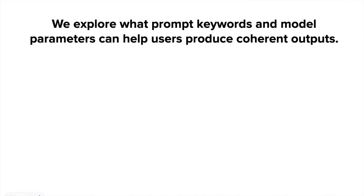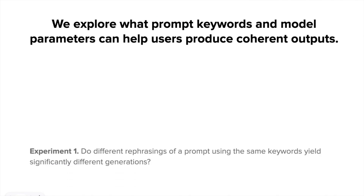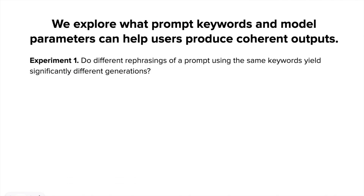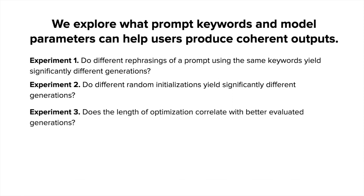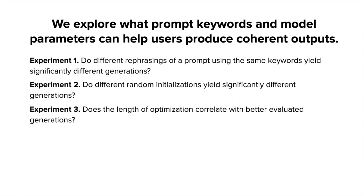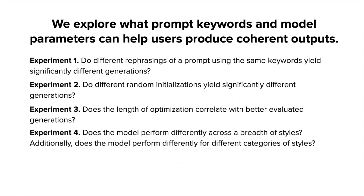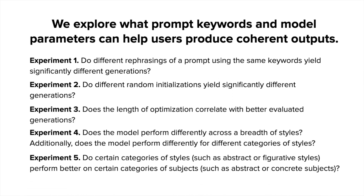In this paper, we conduct a study that explores what prompt keywords and model hyperparameters can help users produce coherent outputs. Across five experiments, we study prompts structured to include subject and style keywords, and we investigate success and failure modes of these prompts. We look at over 5,000 generations spanning over 50 subjects and 50 styles.